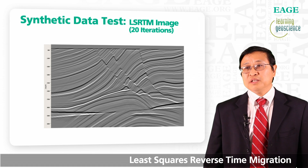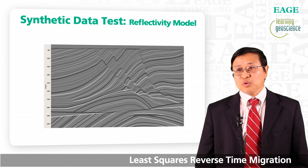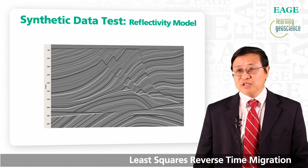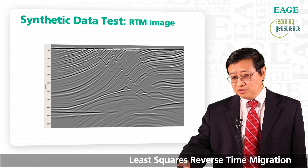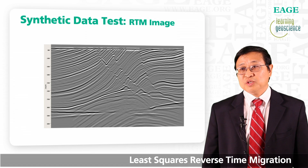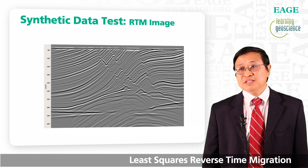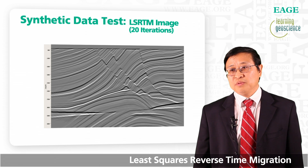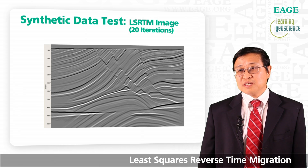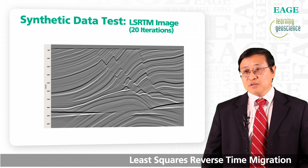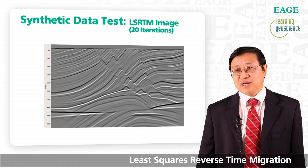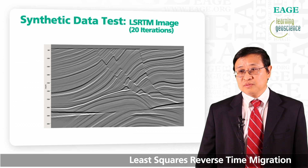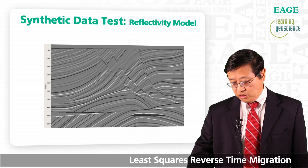Third, least squares RTM gives you a broadband image. Looking at any boundary — for example a black boundary — compared with regular RTM, it is still black but on both sides of the black you have white side lobes. In least squares RTM you only have black, which means it suppresses the side lobes. Because of this side lobe suppression, it gives you a broadband image look — typically it's like a 3D texture effect where some layers look like plateaus and some look like valleys. Compared with the true reflectivity, it is a good match.